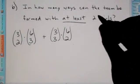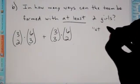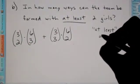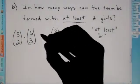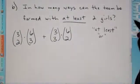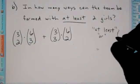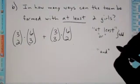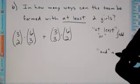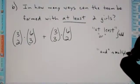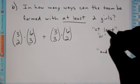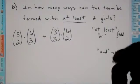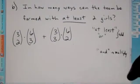So here, whenever you see the word at least, or you see the word or, you're going to be doing some type of addition with your answers. If you see the word and, this means to multiply. Not every problem is going to have the words at least or or, or and. But if you do see these words, this will give you a little hint on what to do.